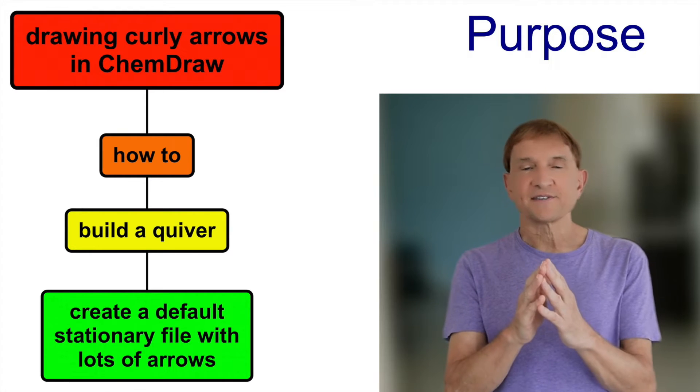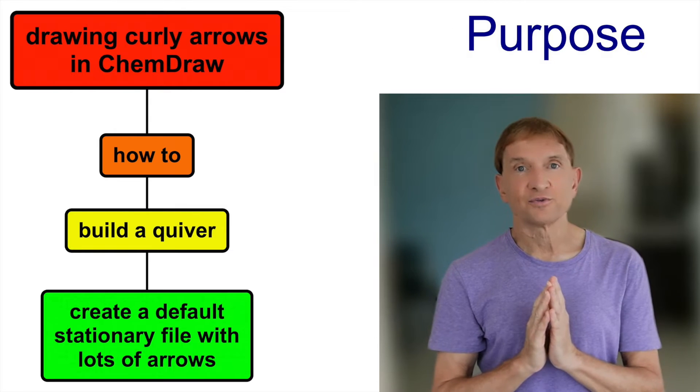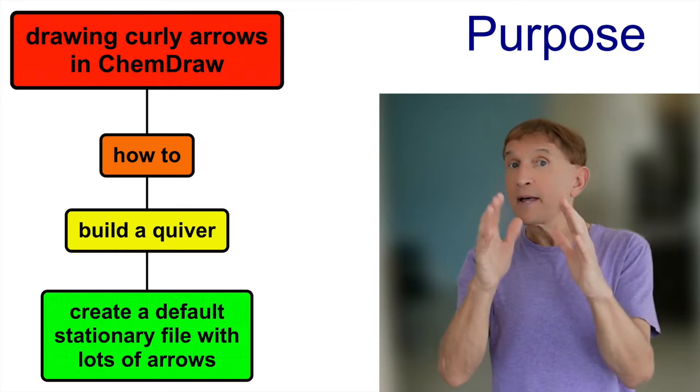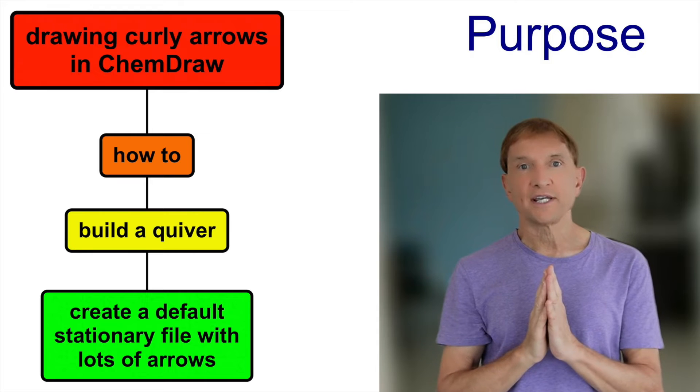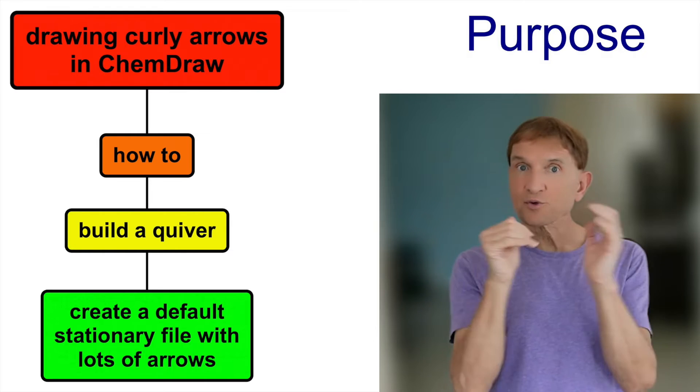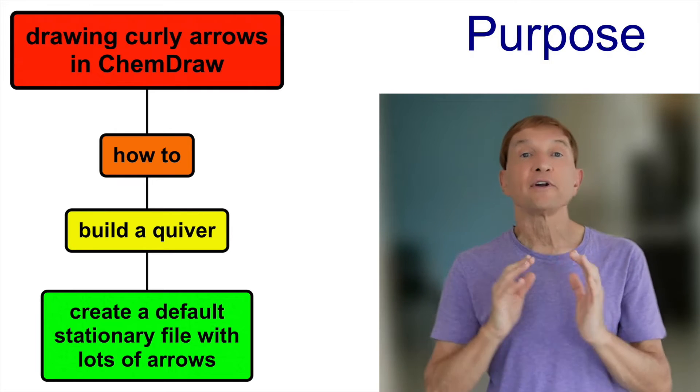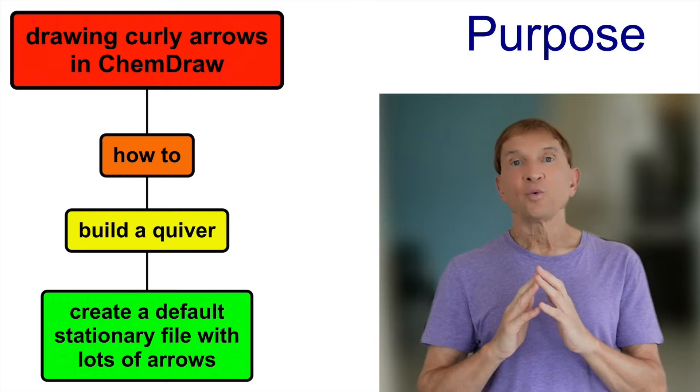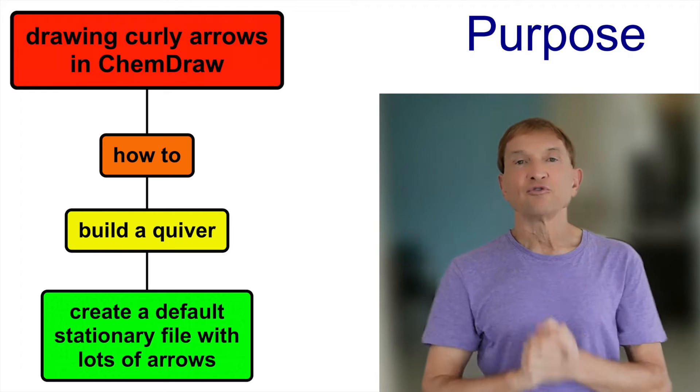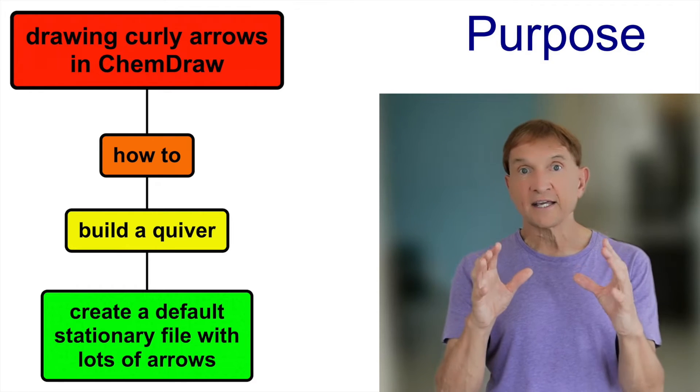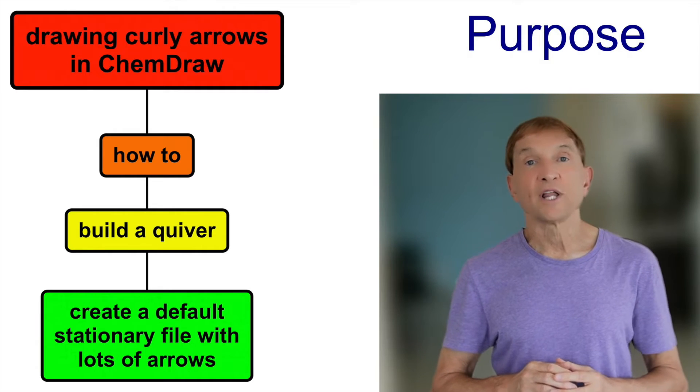And then I'd like you to practice doing this over and over again to build a quiver of arrows. And in doing that repetitively, you may well remember exactly what the procedure is. Once we've got this quiver of arrows, we'll put it in a default stationary file so every time we open ChemDraw back, that file shows up, perhaps containing key structures that we might modify to get the graphic we'd like to have.